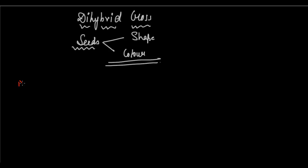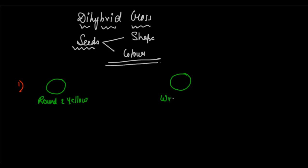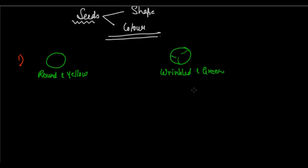So what did Mendel do? Mendel took two seeds. One seed was round and yellow, whereas the other seed was wrinkled and green. So yellow and green are the colors, and round and wrinkled are the shapes. Now what are the genotypes?